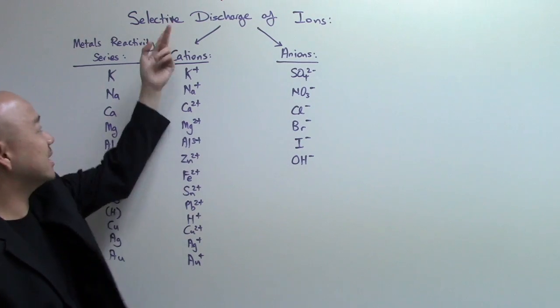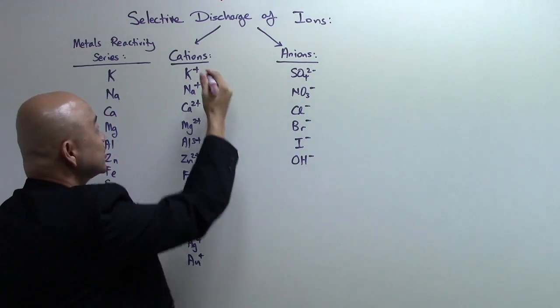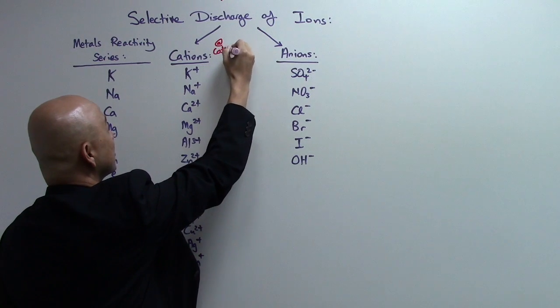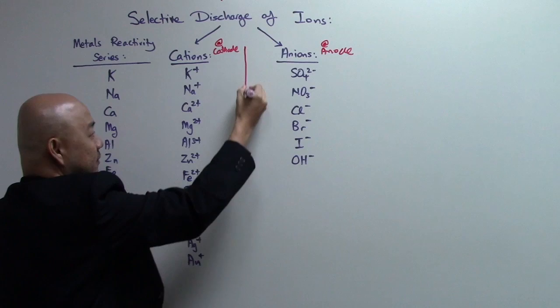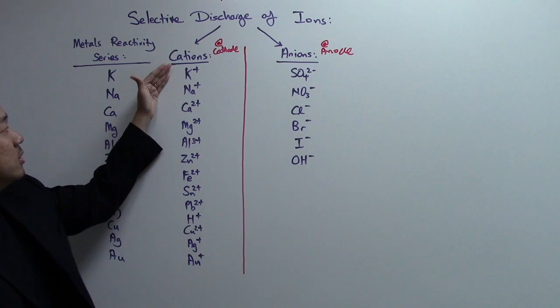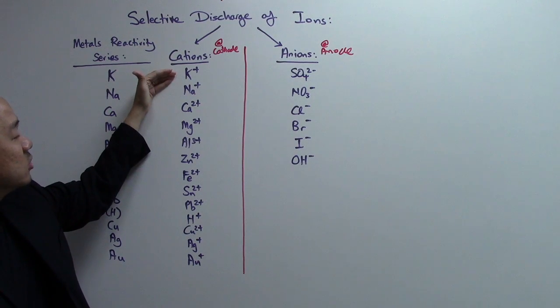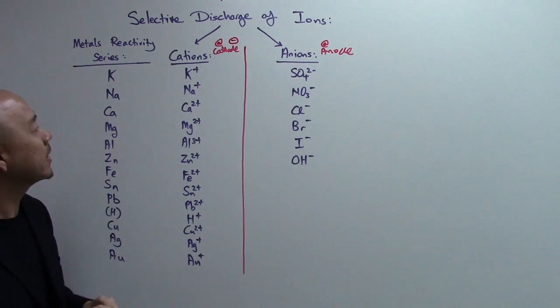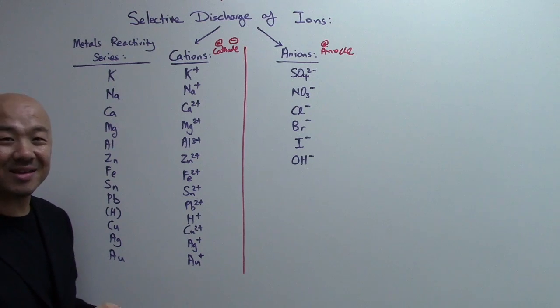Over here, selective discharge of ions as you can see, I separate them into the cations and the anions. Once again, the cations will be discharged at the cathode, whereas anions will be at the anode. And then I kind of draw a line down to split them up. Let's talk about the cations first. These positive ions, the cations, will be attracted to the cathode which is negatively charged. Then what happened over here? Let's say you have all these ions inside there. Who will be selectively discharged?